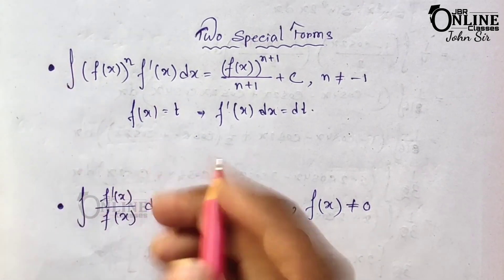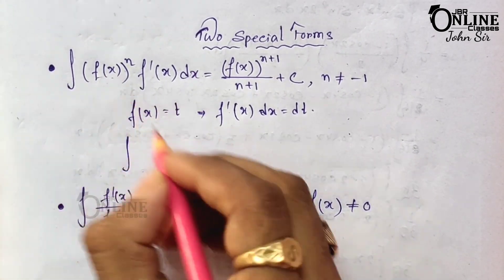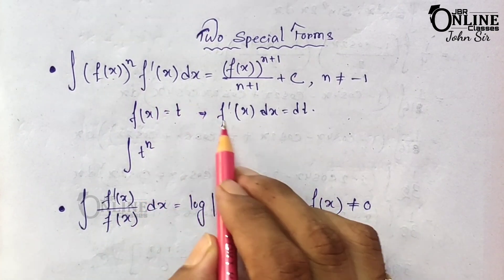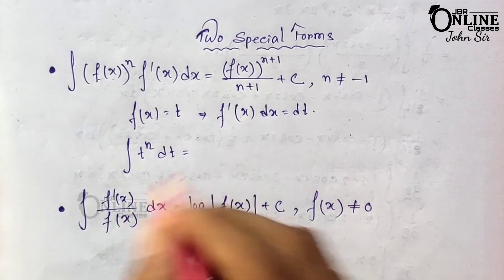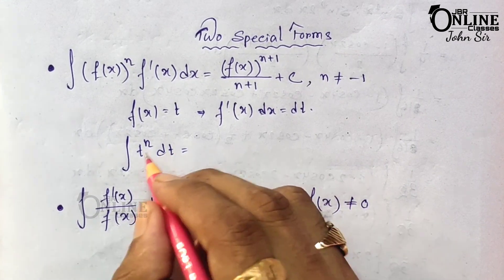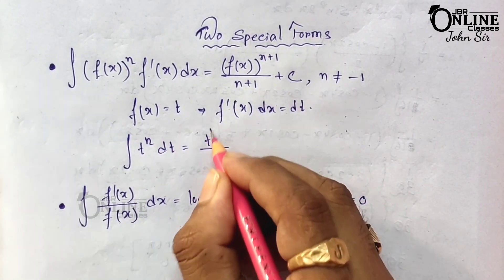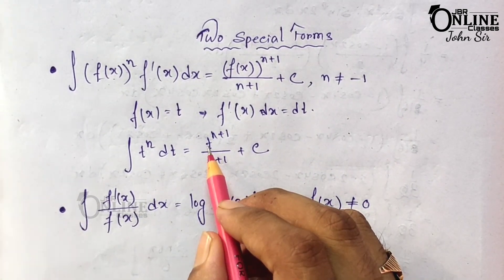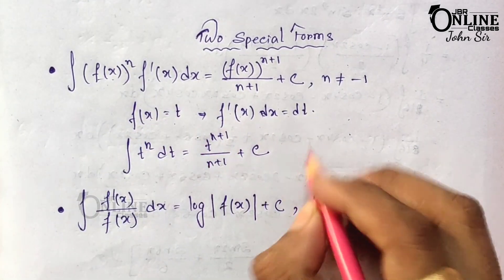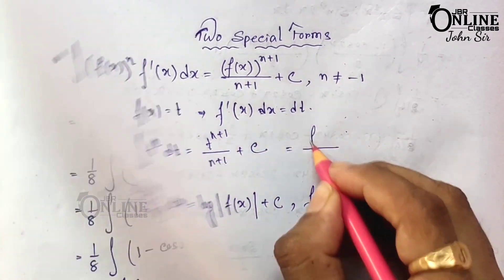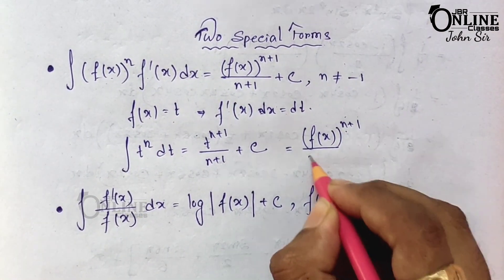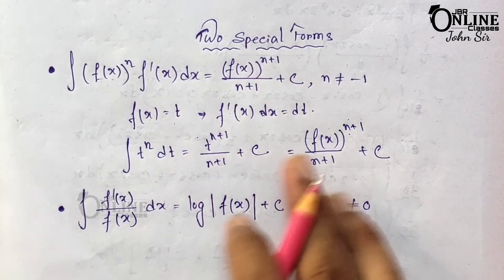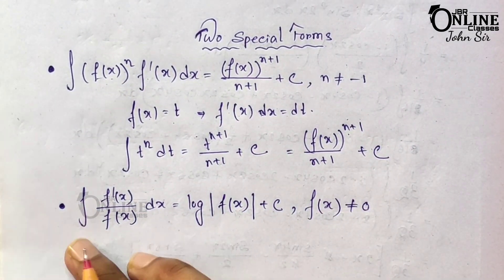Since f(x) = t, the integral becomes ∫tⁿ dt. Using the power formula, this equals t^(n+1)/(n+1) + C. Substituting back t = f(x), we get [f(x)]^(n+1)/(n+1) + C. That is the first formula, now proved.